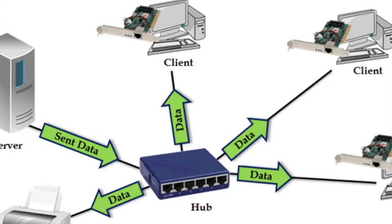You can do data transfer at the physical layer — whether that is a cable or something else. In the OSI model, the Hub operates at the physical layer.